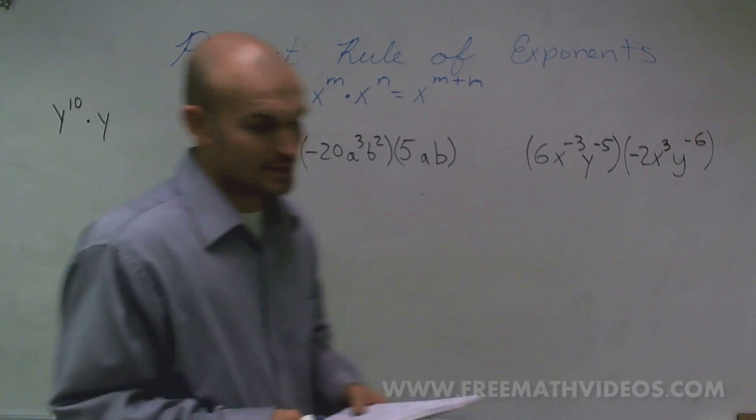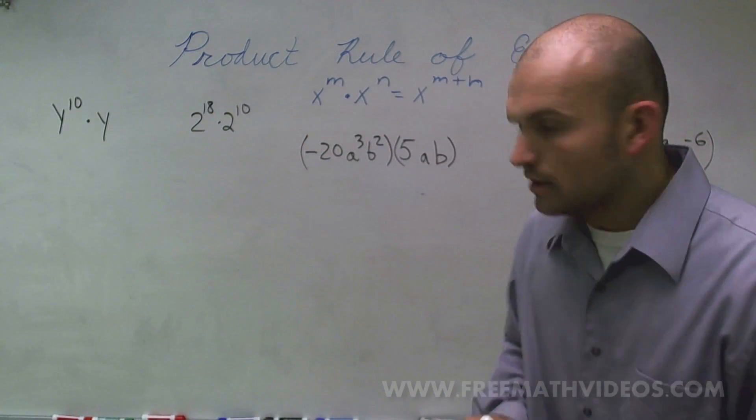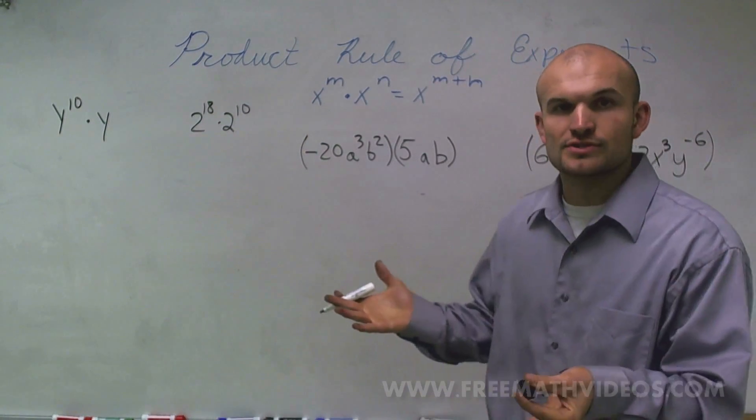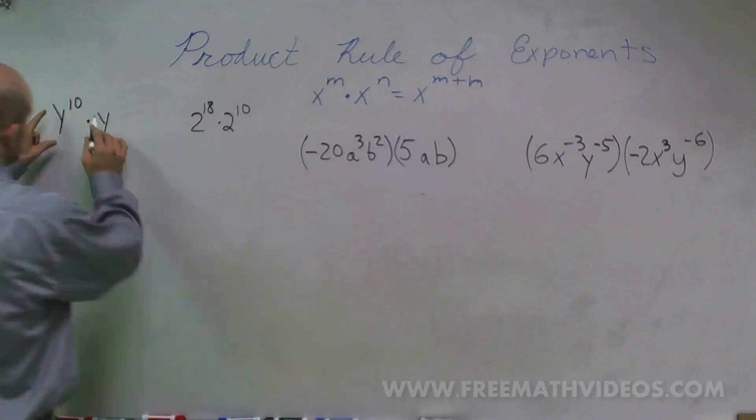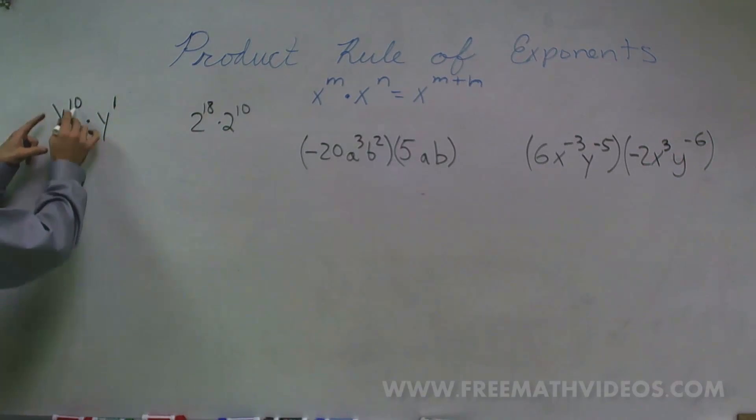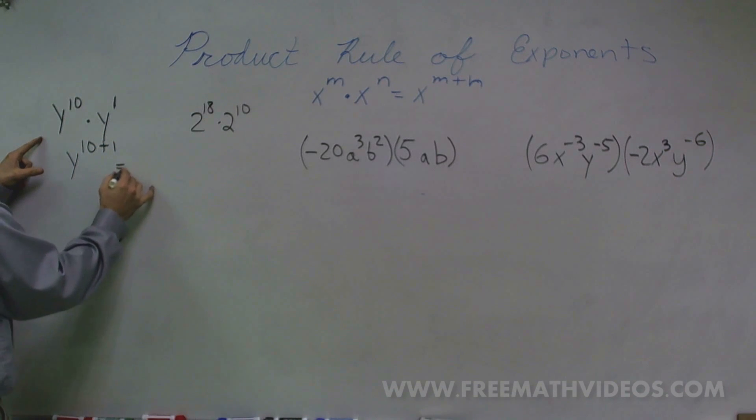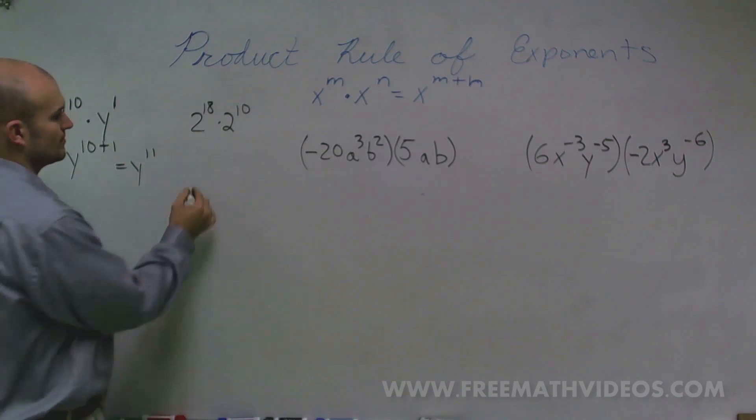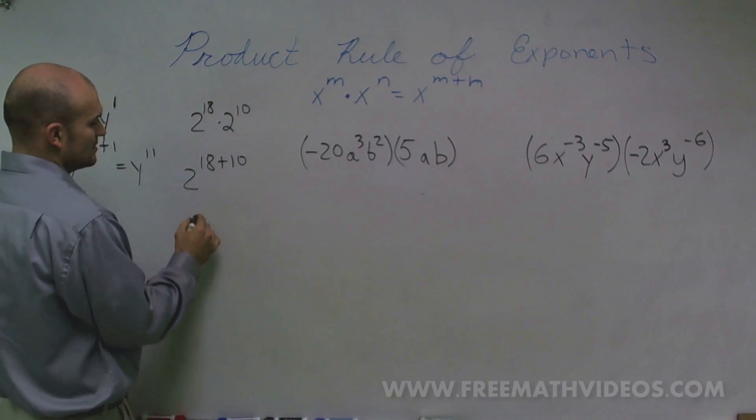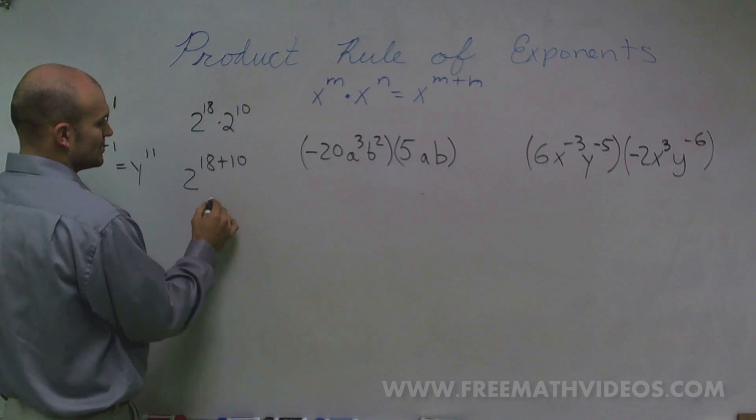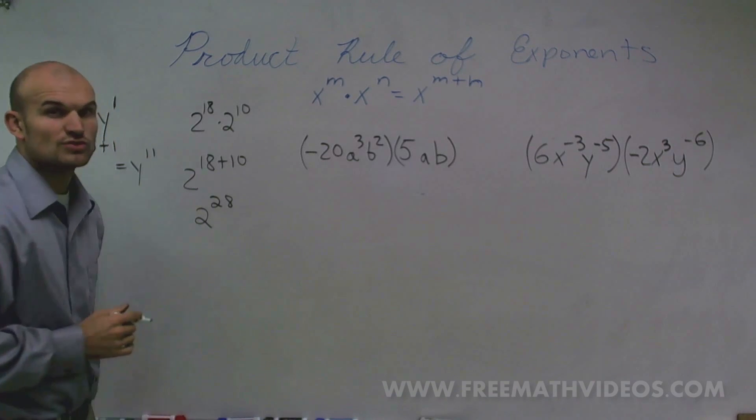Okay, here we go again. So what I want to do is let's just use our product rule of exponents to solve each one of these problems. Here I have an exponent of 1, so I'm going to write this as y to the 10 plus 1 equals y to the 11. Over here, I'm going to write this as 2 to the 18 plus 10, so therefore this is going to equal 2 to the 28th power.